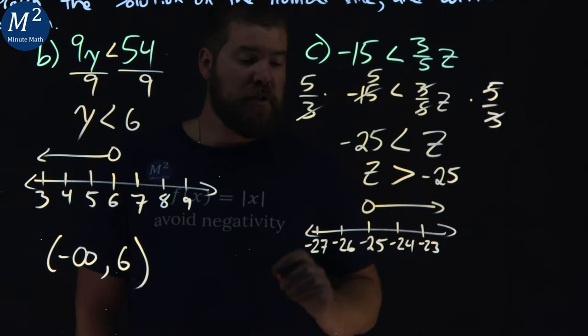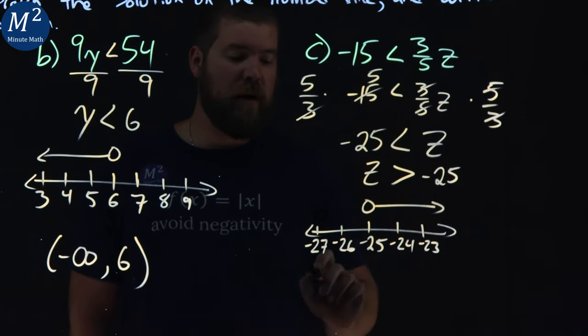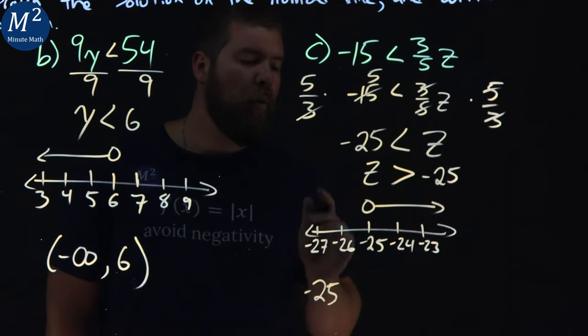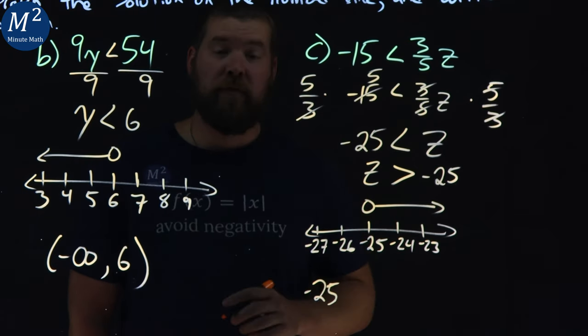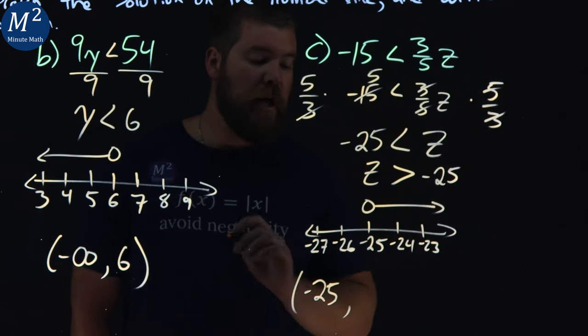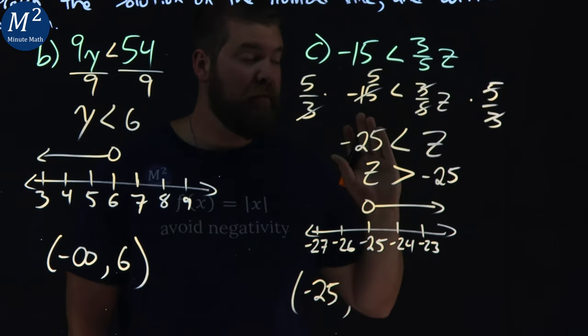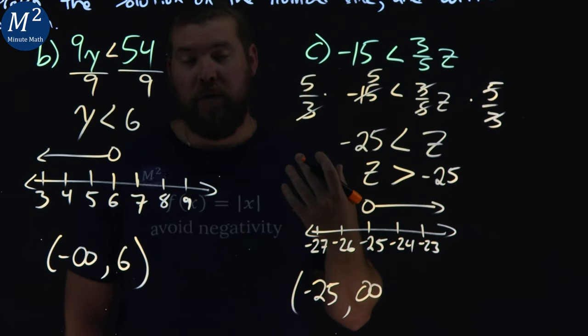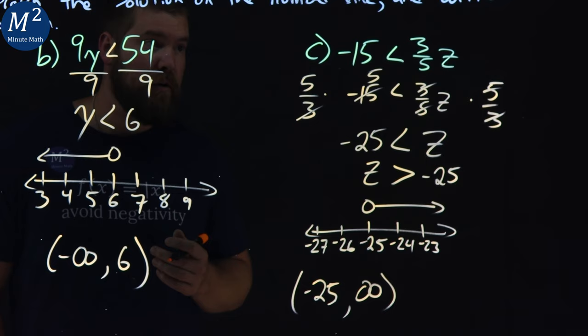To write this in interval notation, we start at the lowest possible value here, negative 25. Don't forget the negative. And we can't equal again negative 25. So we put a parenthesis. And we go all the way up to positive infinity. It's going on forever. Infinity right there. Again, with infinity, we put a parenthesis. And there we have it.